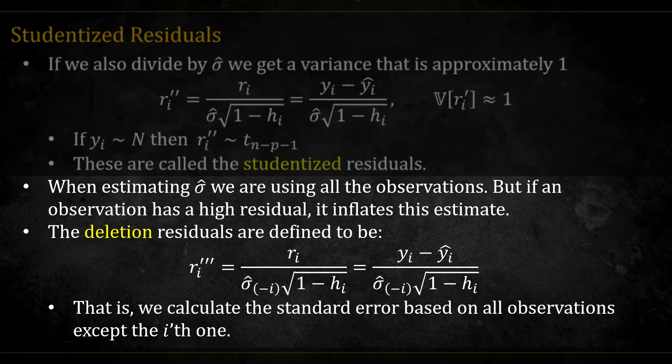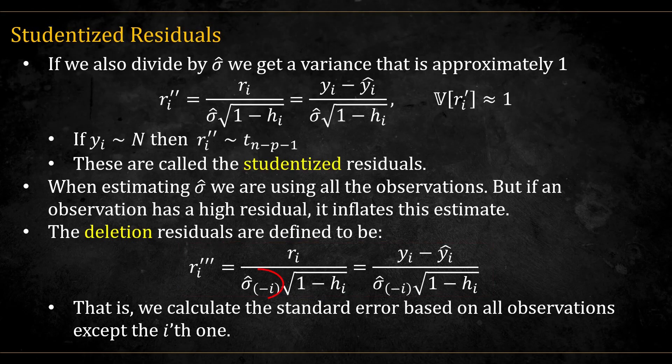We can even go one step further and realize that our estimates for sigma include all of the observations. But if an observation has a high residual, for example if it's an outlier, this can inflate the estimate. So the deletion residuals are defined to be this, where the sigma estimate includes all observations except the ith one.